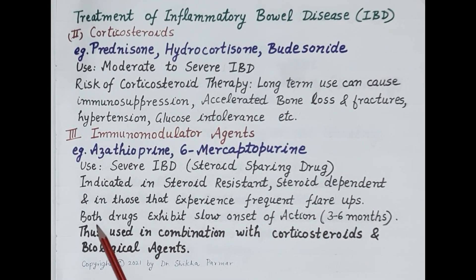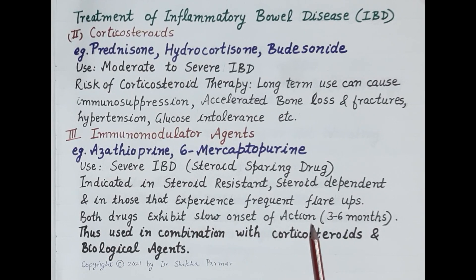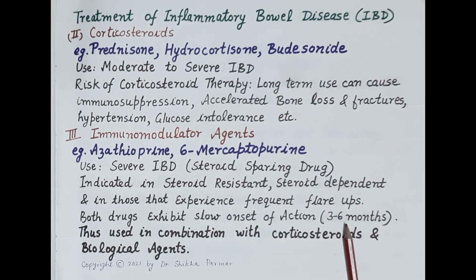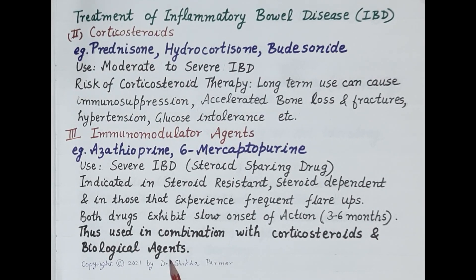Both azathioprine and 6-mercaptopurine exhibit slow onset of action — their effect is seen only after three to six months of use. Therefore, initially these drugs are used in combination with corticosteroids and biological agents.